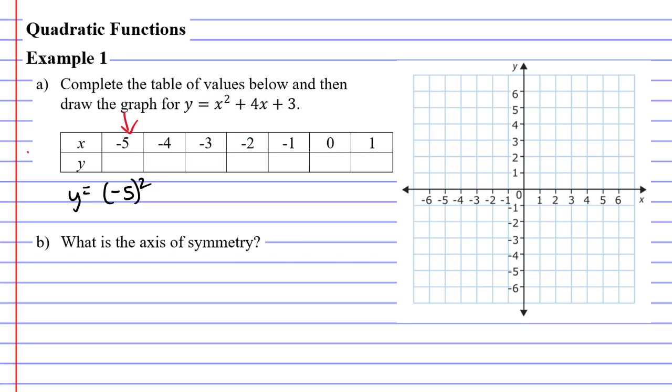Next it tells us to add 4 plus 4 and times 4 by x. Remembering that x is negative 5. So we'll write times negative 5 in brackets. And then finally we're told to add 3 at the end.